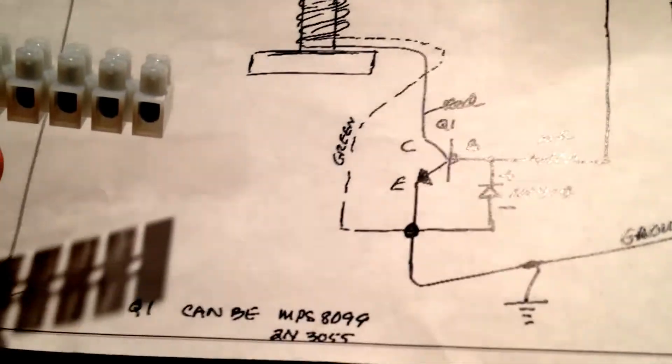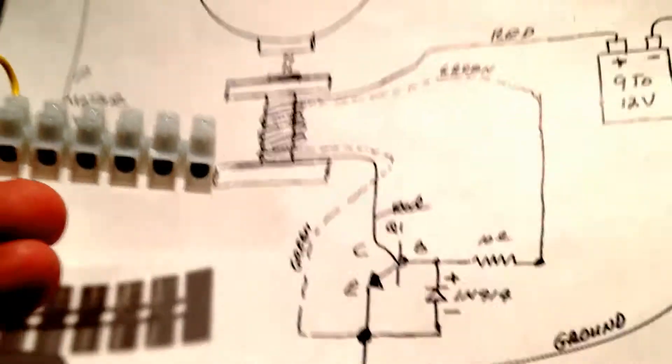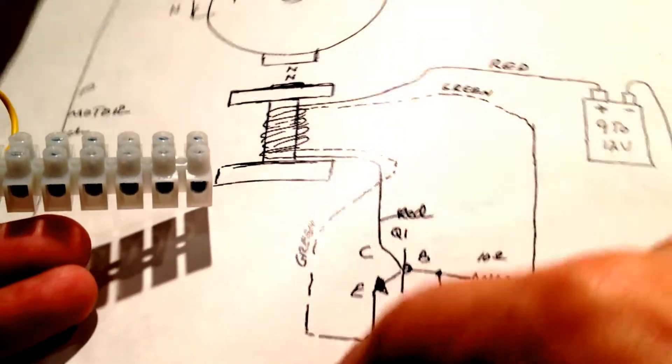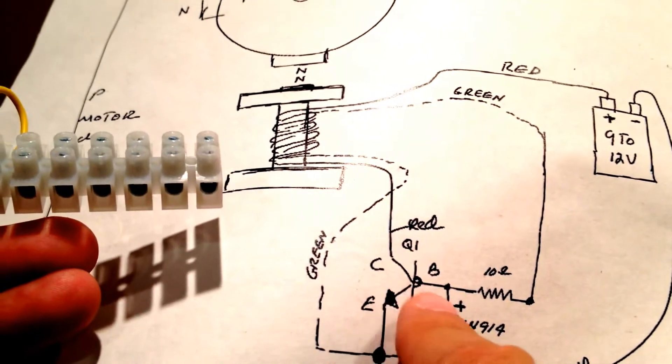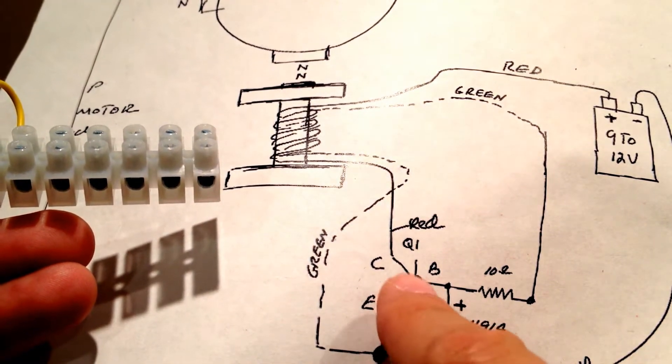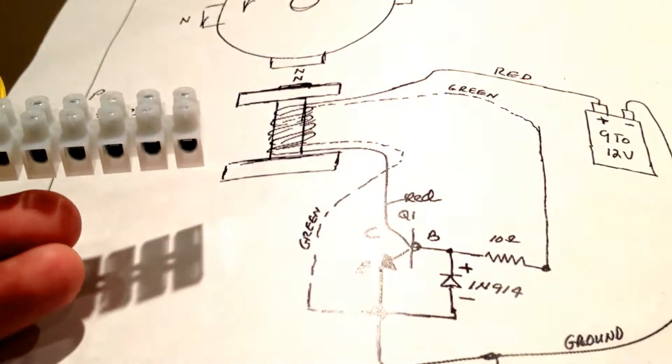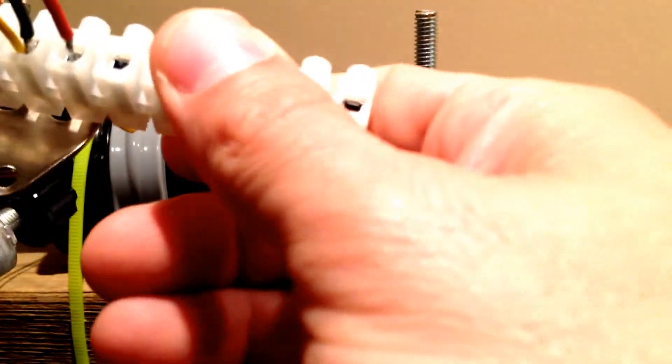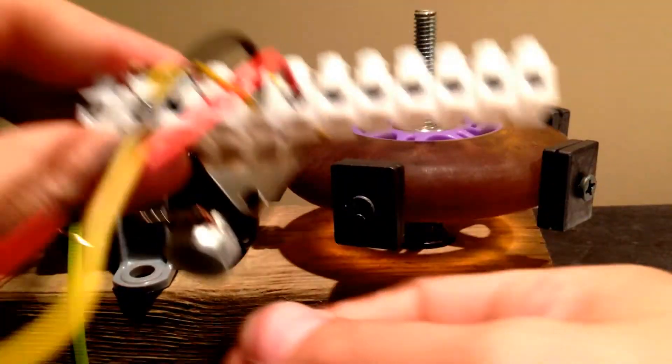Now one thing that you want to take into consideration is the transistor and as you can see from the schematic here if there's not too much of a glare you've got the collector emitter and base.